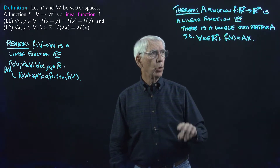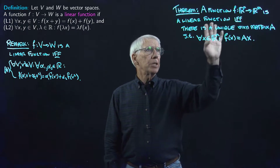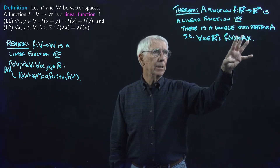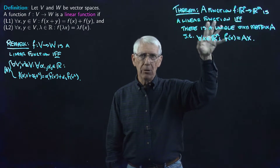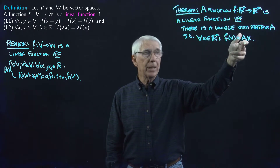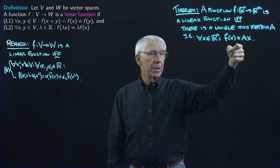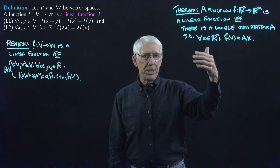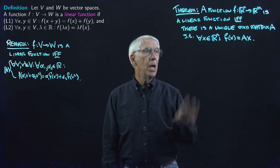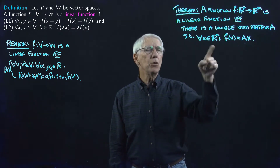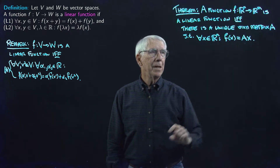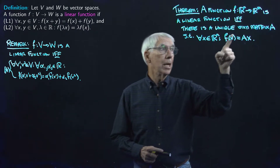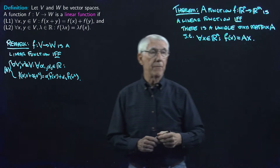In other words, putting this into words: linear functions between Euclidean spaces are exactly the functions that we saw at the outset when we first defined a matrix and defined our function that way, and showed it was a linear function because it would satisfy L1 and L2. And what this says, effectively, is not only does it go that way, it goes the other way, and the matrix is unique. That is, if the function is linear, then it has to be that kind of function, and there's a specific matrix that gives us that function.